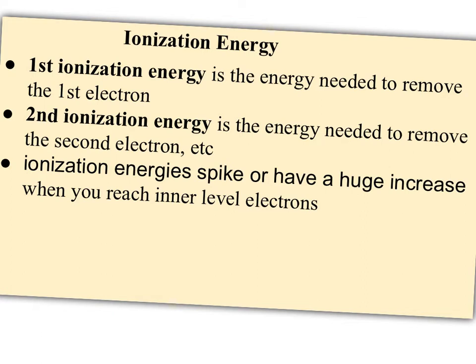An interesting trend is that ionization energies will spike or have a huge increase when you reach inner electron levels. You can tell what family an element belongs to, or how many valence electrons it has, by looking at where those energy spikes occur.